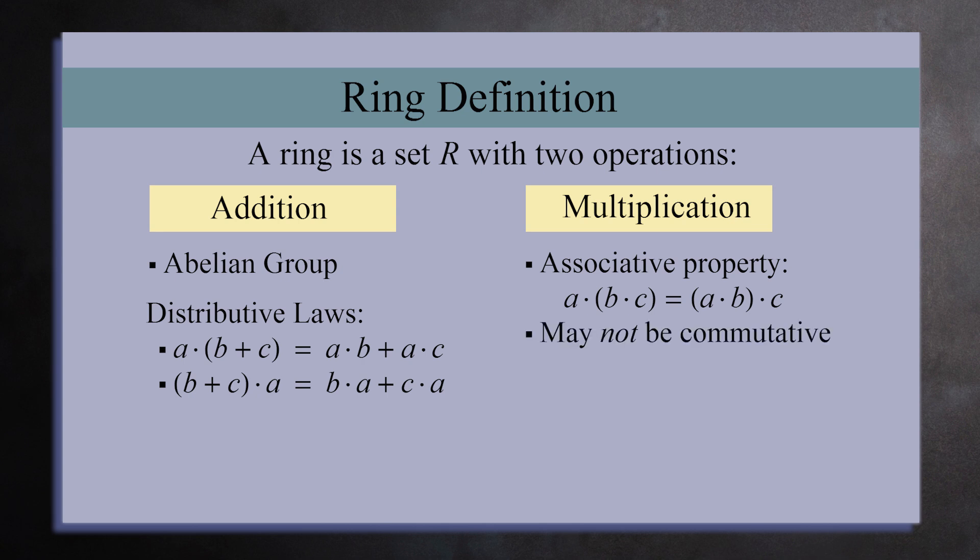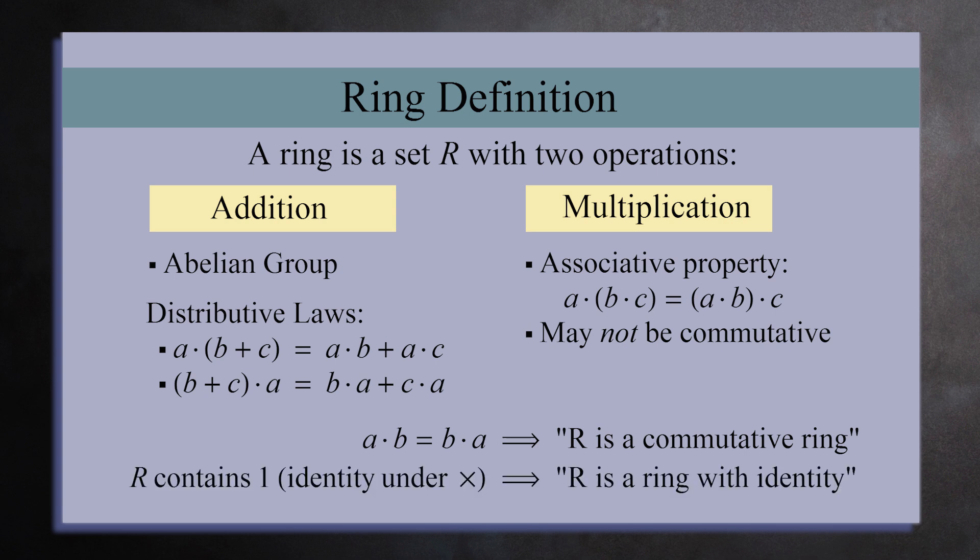In a ring, multiplication may not be commutative. If it is, we call R a commutative ring. And if the ring has a multiplicative identity 1, we call it a ring with identity. Every ring has the additive identity 0, since it's a group under addition. So when you say ring with identity, everyone knows that you mean ring with multiplicative identity.